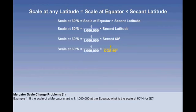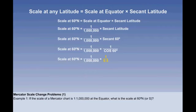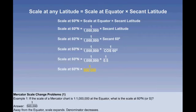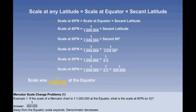That's not a very convenient form. Firstly, we don't have a secant function on our calculator. And secondly, representative fractions always have 1 as the numerator. So instead, write it as 1 over cos. Your calculator will tell you that the cosine of 60 degrees is a half. So the scale at 60 north will be 1 to 500,000. As a common sense check: the scale expands as we move away from the equator, meaning the denominator decreases — from 1 million at the equator to 500,000 at 60 north. Correct.